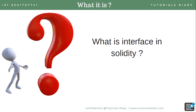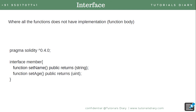In Solidity, we call it an interface when all the functions defined in it have no implementation — that means no function body. As shown in the example, we defined an interface named 'member' with two functions: setName and setAge. These two functions don't have any function body. You can have multiple functions inside an interface, but all functions must have no implementation. If you try to add a function body, it will throw a compilation error saying a function body is not allowed in the interface.